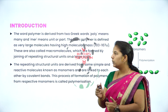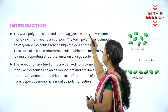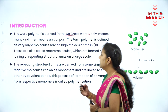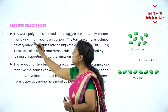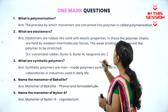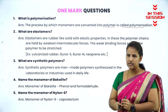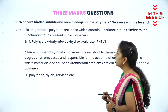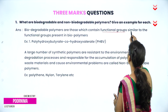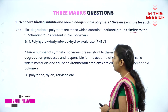The word polymer has been derived from two Greek words: poly means many and mer means unit. The process by which monomers are converted into polymers is called polymerization. Biodegradable polymers are those which contain a functional group similar to the functional group present in a biopolymer.